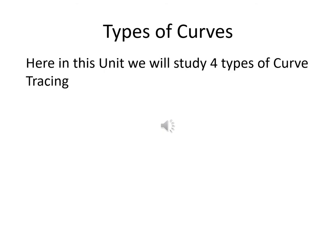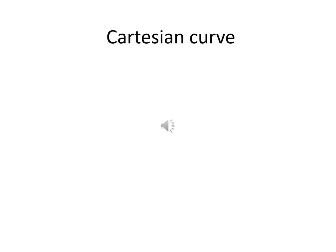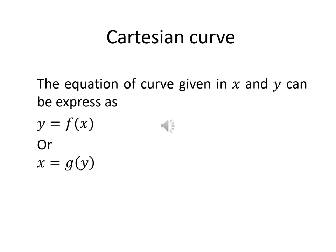As already mentioned, we have four types of curves: Cartesian curves, parametric curves, polar curves, and rose curves. A Cartesian curve means a relation between x and y. If you can express your equation as y equal to function of x, or x as a function of y, that is a Cartesian curve.